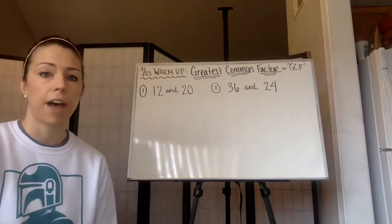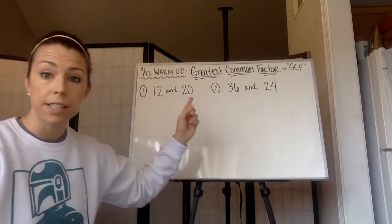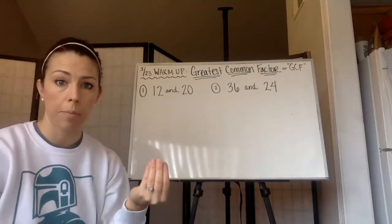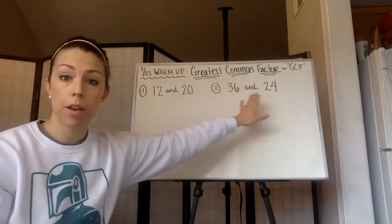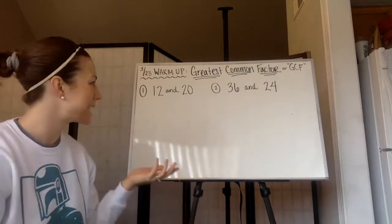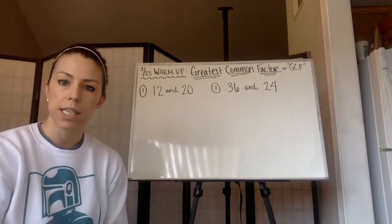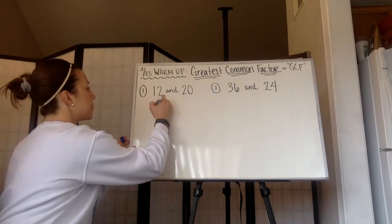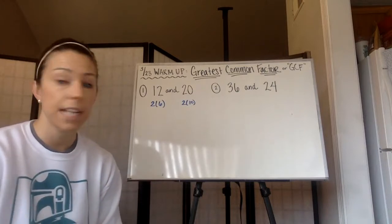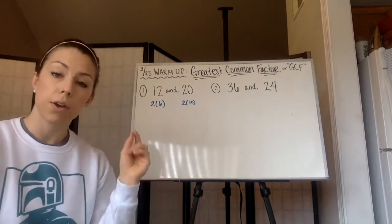Greatest common factor — a factor means if I were to write both numbers as products. For example, 12 is six times two. Six and two are called factors of 12; they're parts of that product. A common factor means I want to find a factor they have in common. For example, two actually goes into both 12 and 20. Two goes into 12 six times and into 20 ten times. However, that's not the greatest common factor because there's a greater number that goes into both 12 and 20.